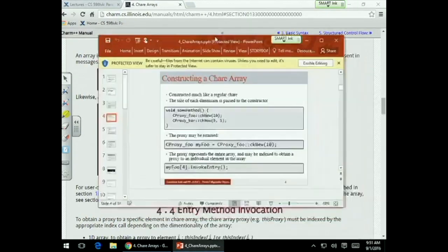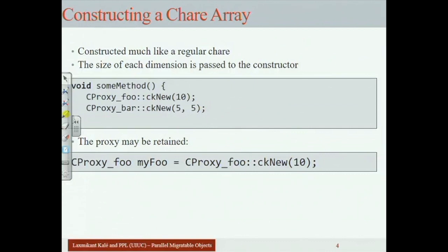For a two-dimensional array where the constructor has no arguments, you only provide the size — for example, a 5-by-5 two-dimensional chare array. As usual, you get a proxy back. If you have a class foo which is a one-dimensional chare array, you use CProxy_foo (notice the uppercase C, uppercase P) to create it and get back an object of type CProxy_foo. Proxy classes stand for the entire collection.